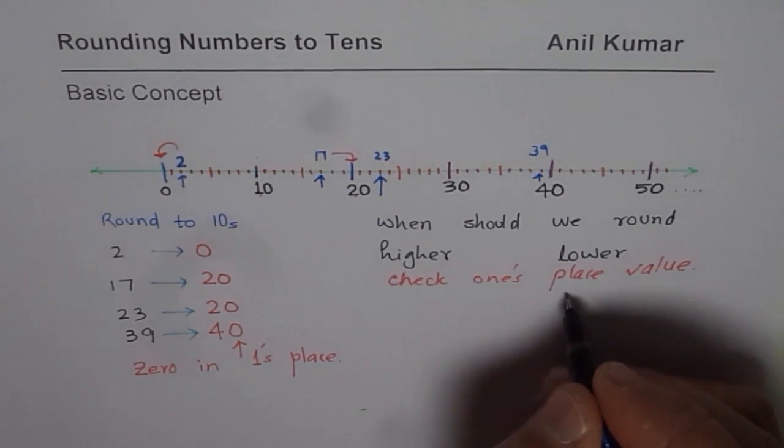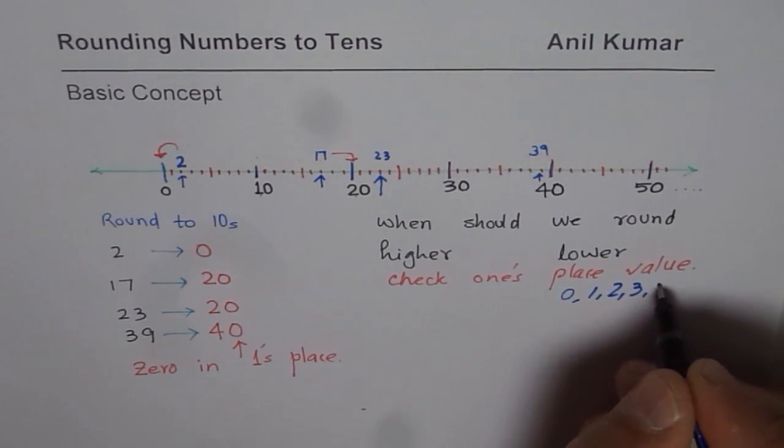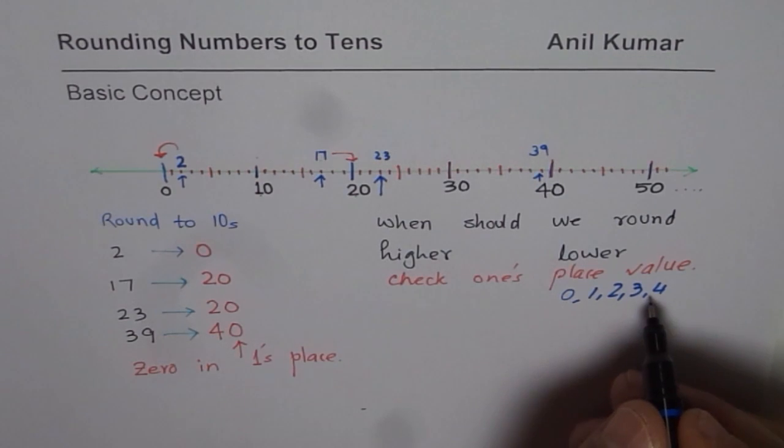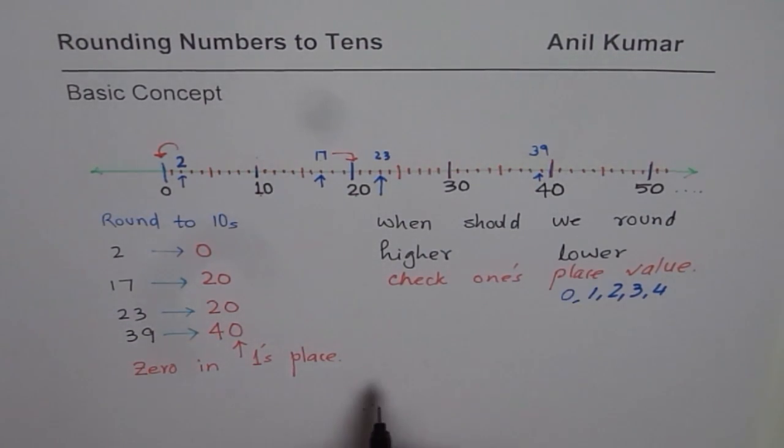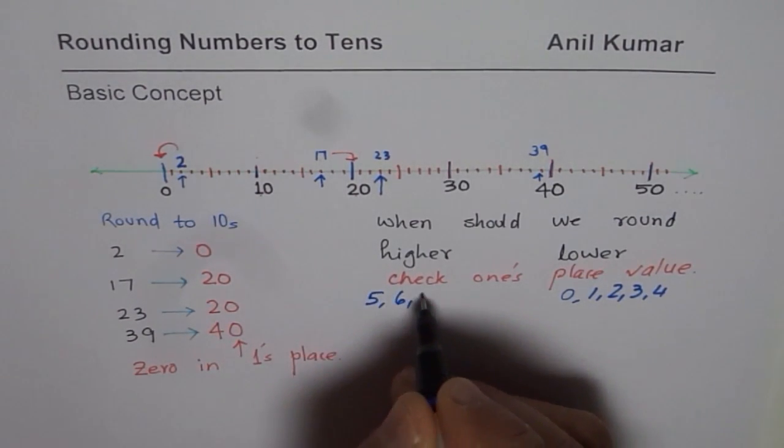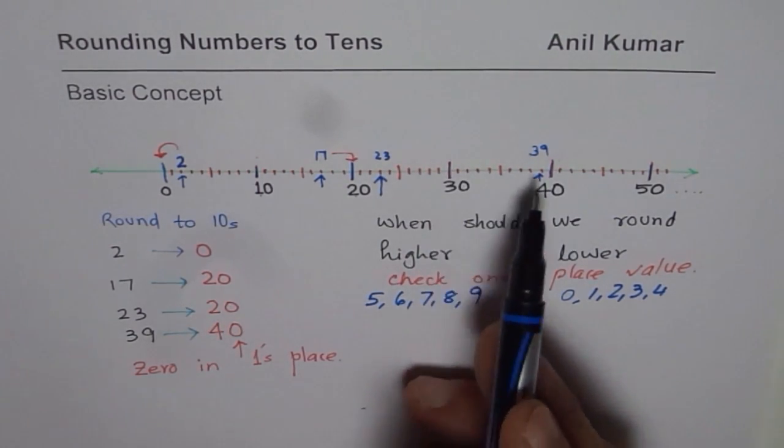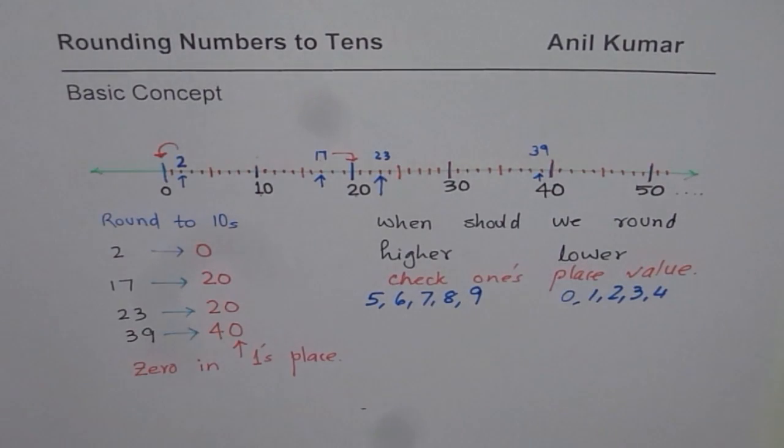So when you check 1's place value, if you get numbers like 0, 1, 2, 3, or 4, these 5 numbers, then you round lower. But if you get numbers like 5, 6, 7, 8, 9, then you round higher. You get the point. So now we will use this rule and then round few numbers.